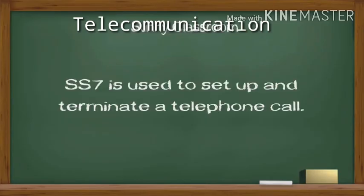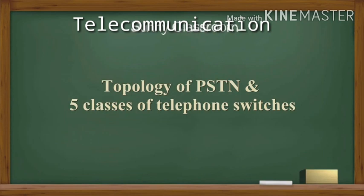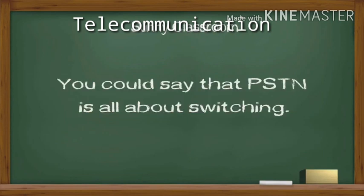SS7 is used to set up and terminate a telephone call. It also handles caller ID, call rating, voice messages, and any other features except the conversation itself. You could say that PSTN is all about switching.